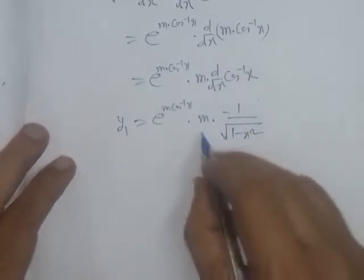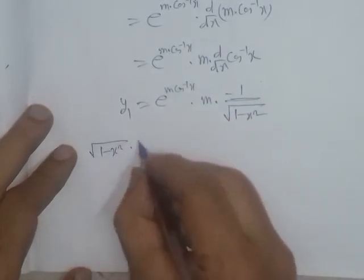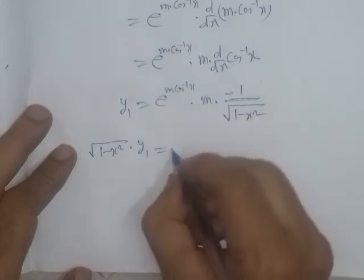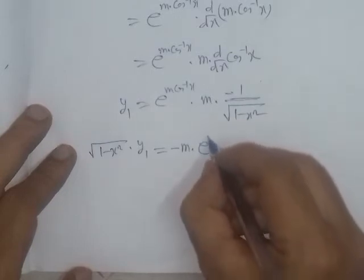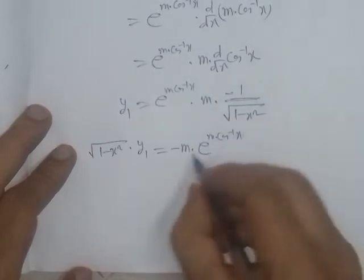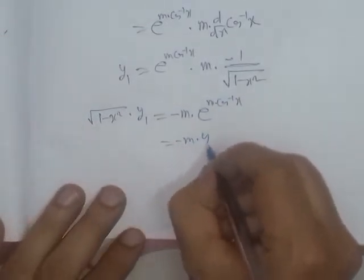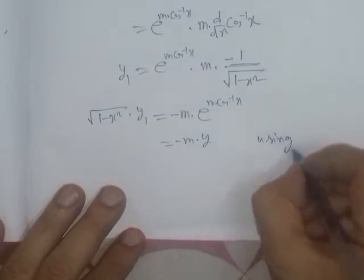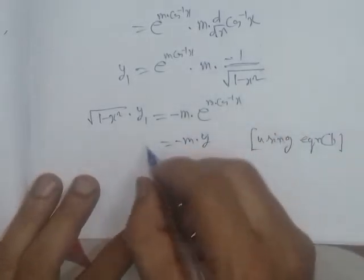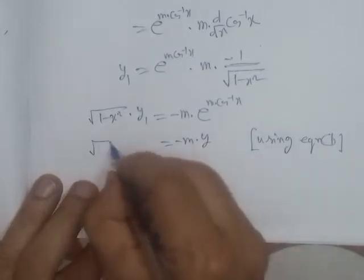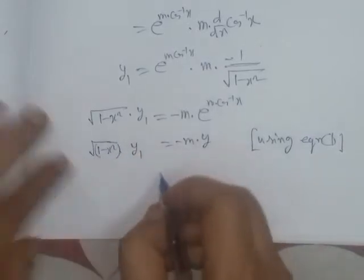We take this factor, the square root of (1 - x²), to the right-hand side. Multiplying across, we get √(1 - x²) · y₁ = −m · e^(m·cos⁻¹x). Using equation number 1, e^(m·cos⁻¹x) equals y. So we substitute y, giving √(1 - x²) · y₁ = −my. To remove the square root, we square both sides.